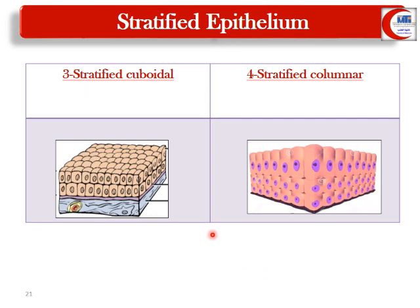Stratified cuboidal epithelium is formed of just two layers of cuboidal cells and is present in the lining of salivary gland ducts. Stratified columnar epithelium has a top layer of columnar cells and is also present in salivary gland ducts and in certain parts of the male urethra.